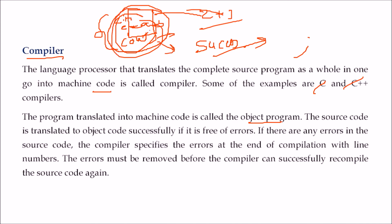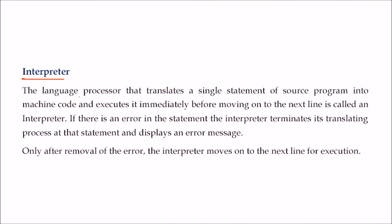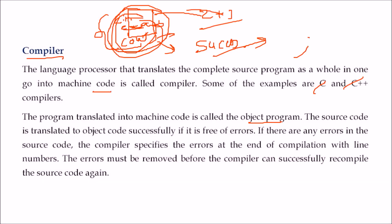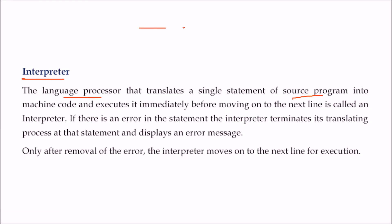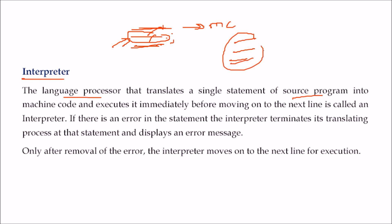The interpreter is a language processor that translates a single statement of a source program at a time. One line is taken at a time and converted into machine code, then the second line, then the third. If any error is found, the interpreter stops and indicates the problem — for example, a semicolon issue on a specific line. After fixing, that line is converted and execution continues. This line-by-line conversion from high-level language to machine code is done by the interpreter.